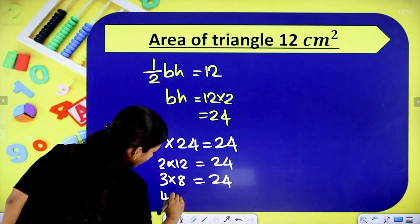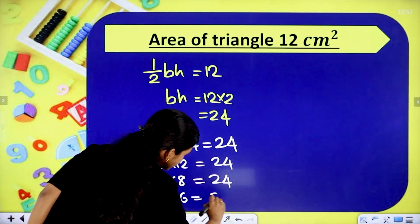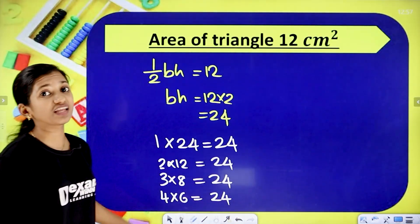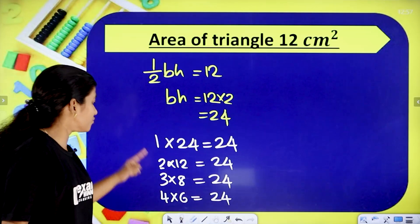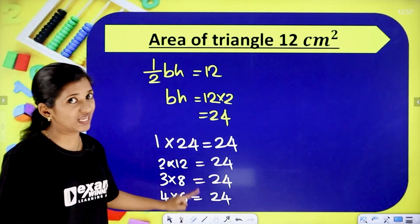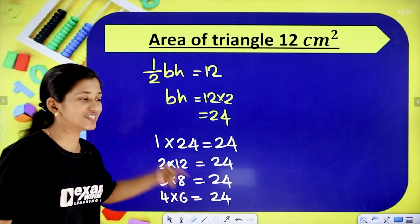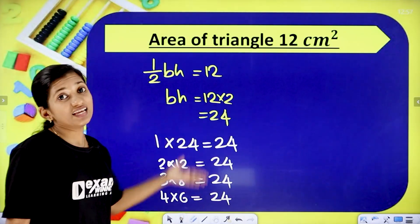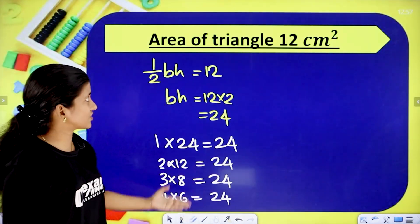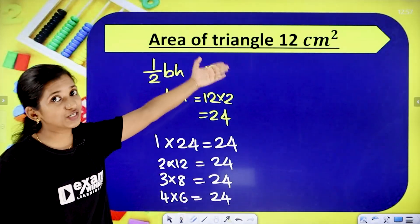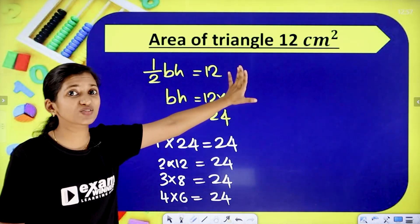Next row: 4 into 6 equals 24, so base 4 and height 6, or base 6 and height 4. All of these factor pairs give us a product of 24, and therefore the area of the triangle is always 12 cm². We are multiplying all these combinations of base and height to confirm the area of 12 cm².